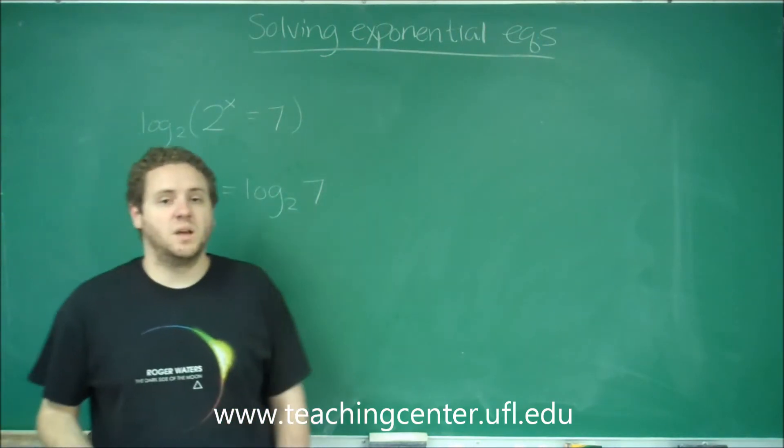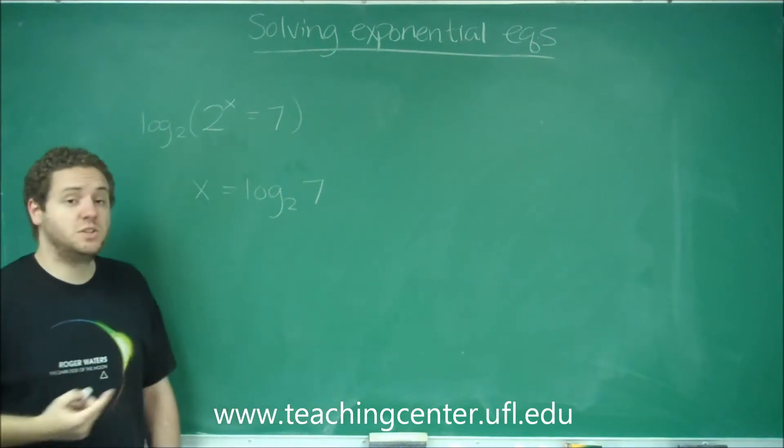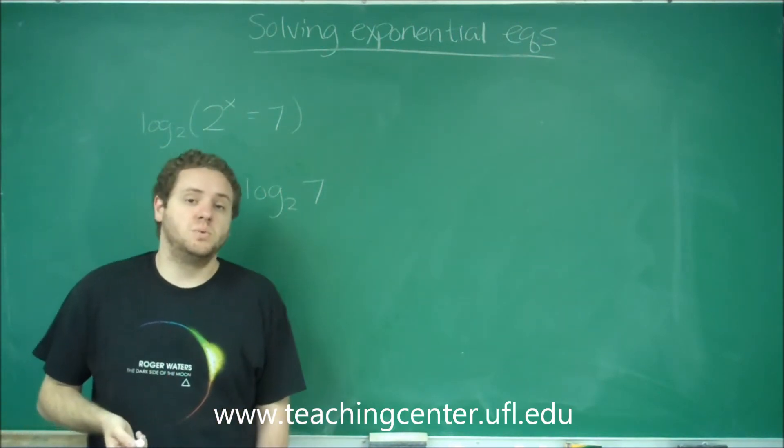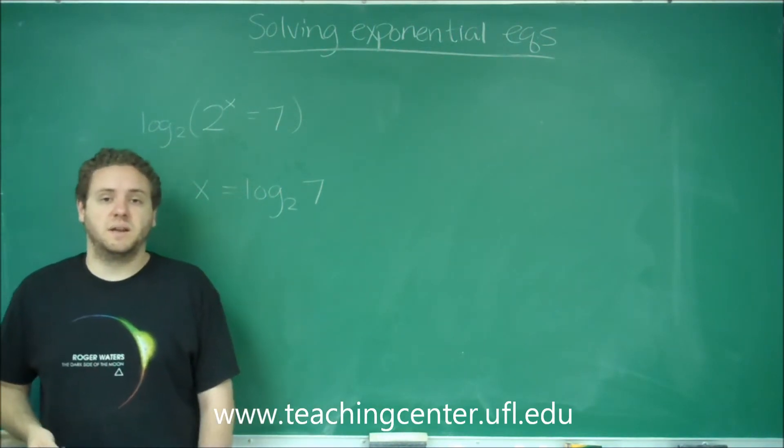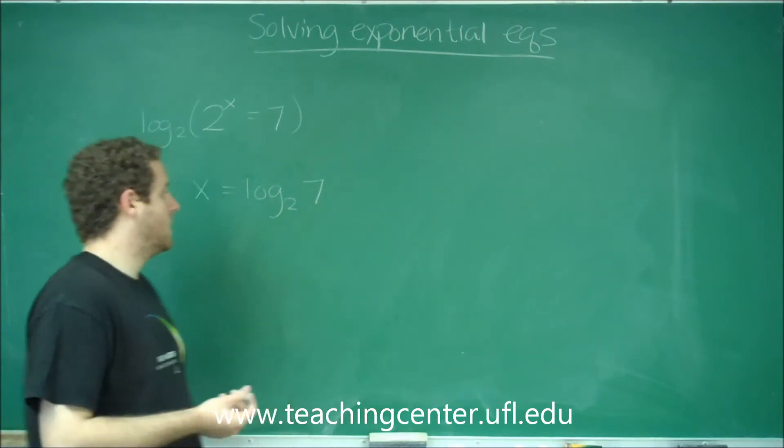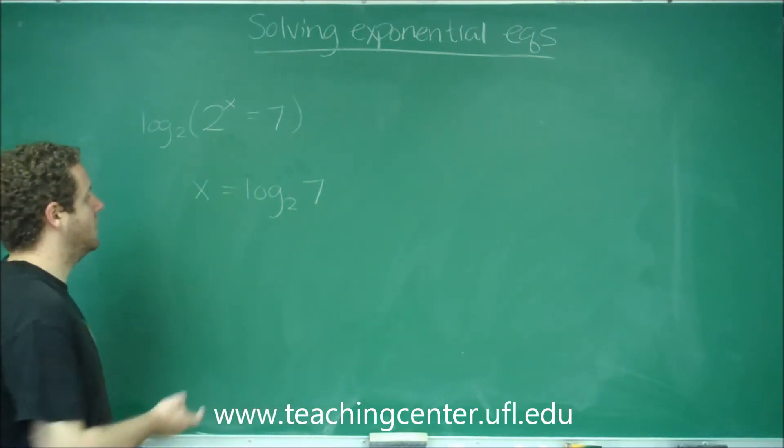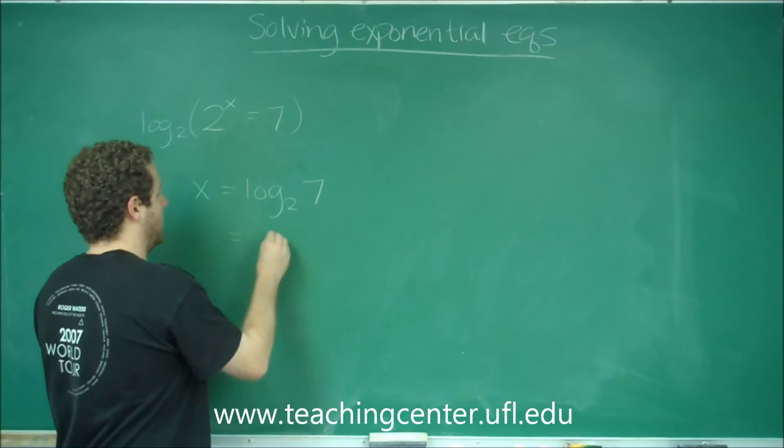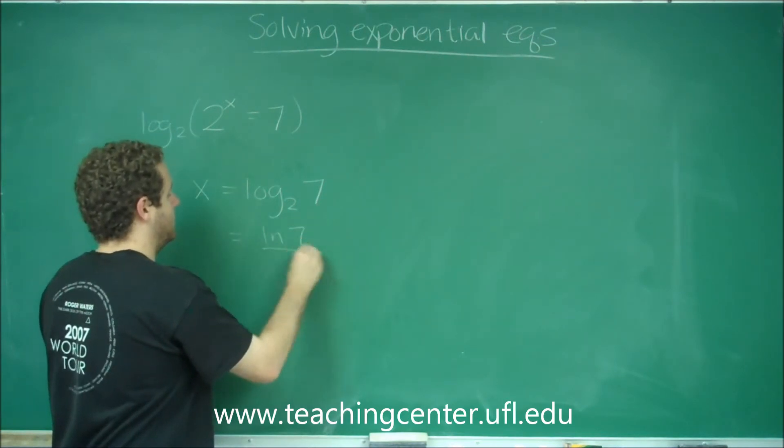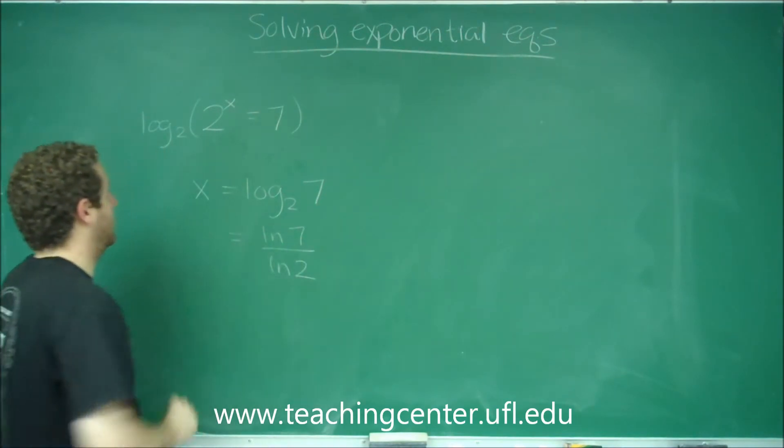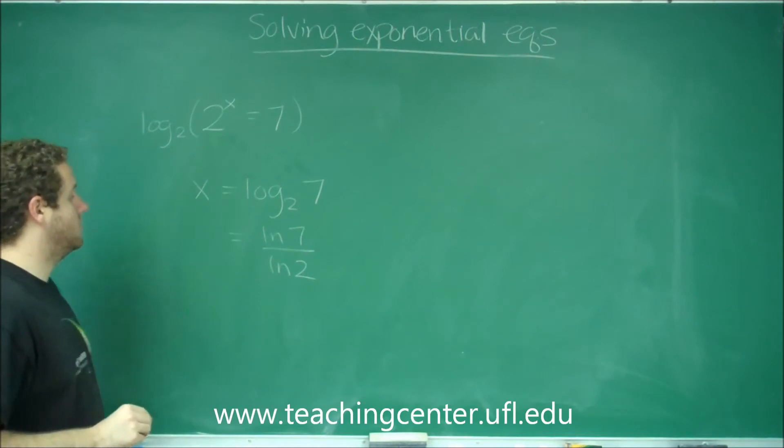Log base 2 of 7 is some number that should be between 2 and 3, but you wouldn't have to know exactly what it is. You could figure that out on a calculator. By the change of base formula, you could switch this to something like ln 7 over ln 2 as well.